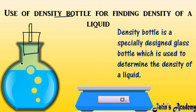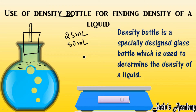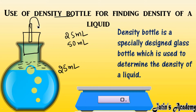In this density bottle, you are going to fill the water till the neck properly. Density bottles come with an appropriate fixed volume — for example, 25 ml or 50 ml. If we put extra liquid into it, that extra liquid will come out through the capillary tube. The function of this capillary tube is to remove all extra liquid from the density bottle, so only the exact volume of liquid remains inside.